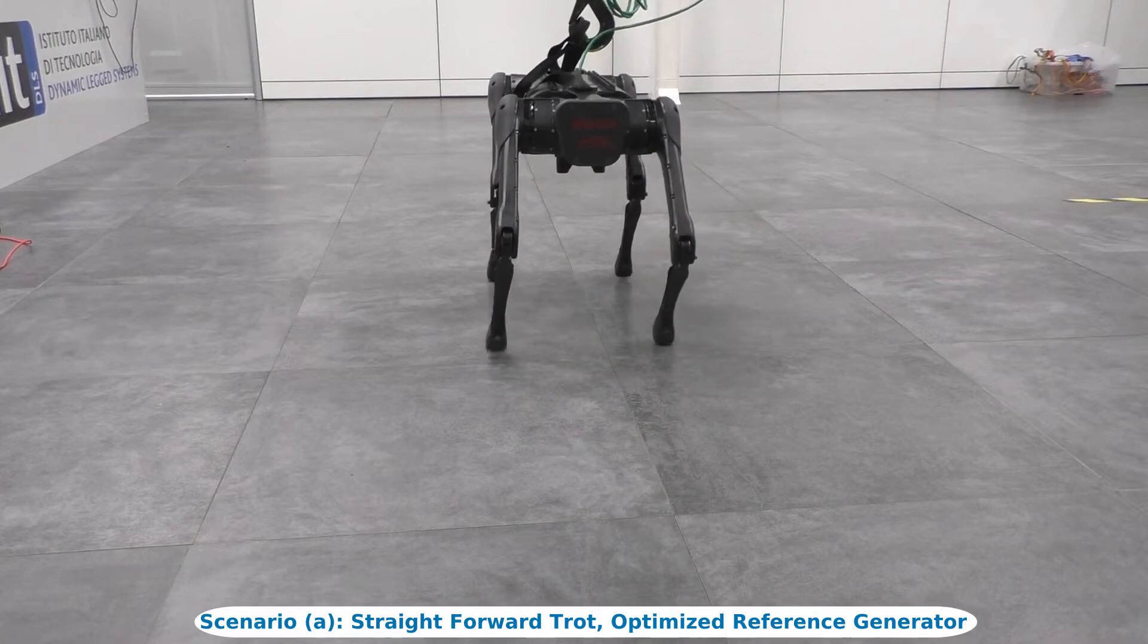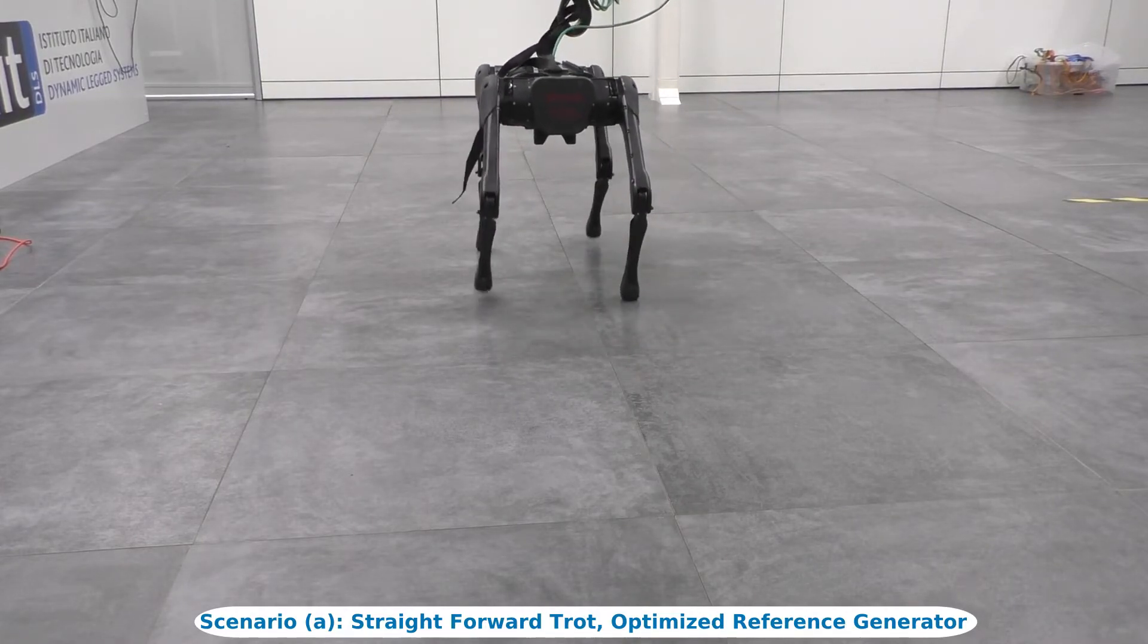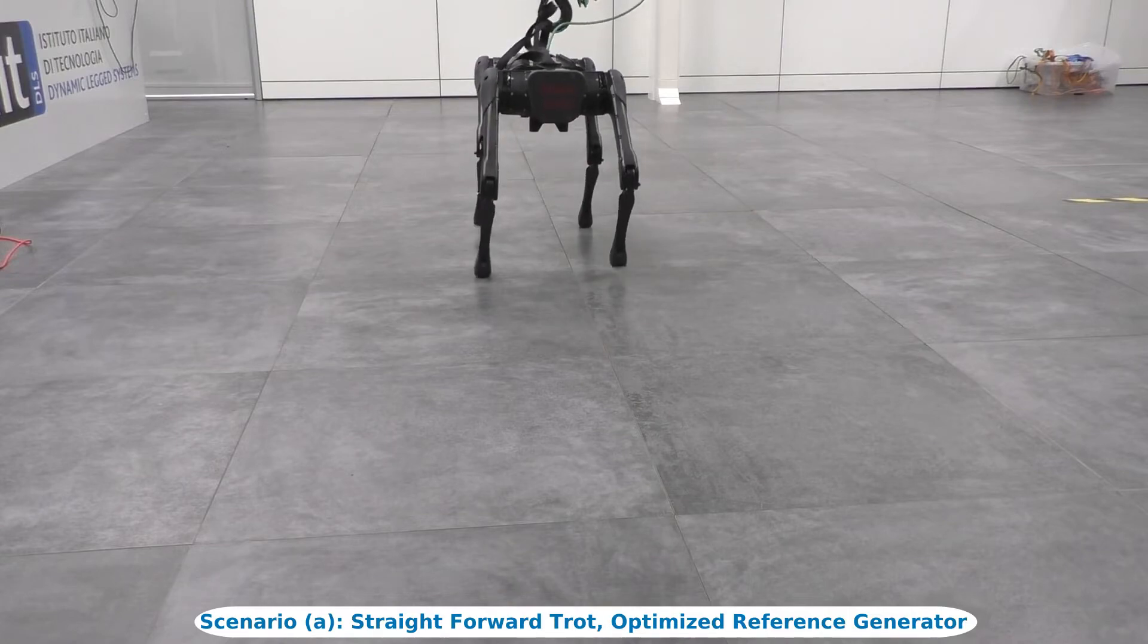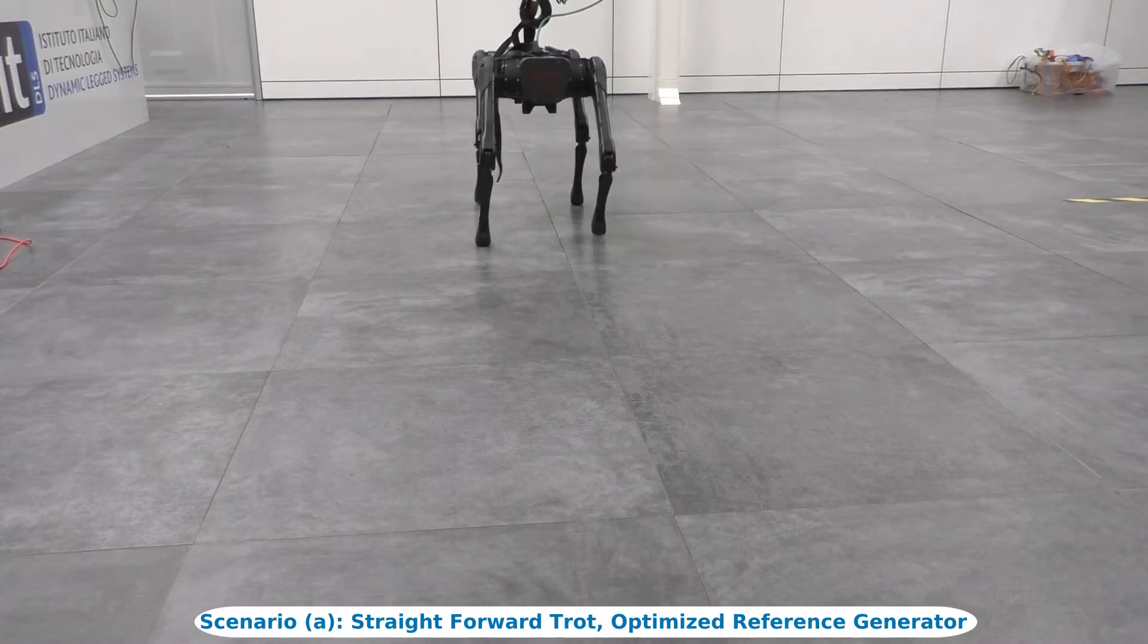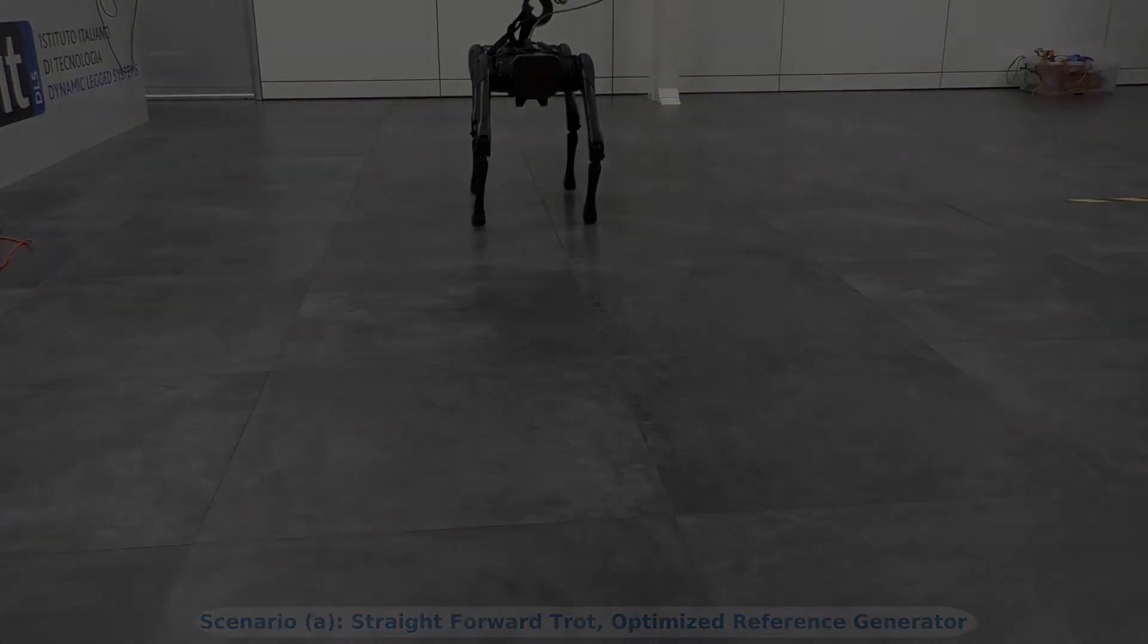We enforce the NMPC with physically informed reference trajectories to be tracked. Following those trajectories, the NMPC corrects the drift and keeps the robot close to the initial lateral position.